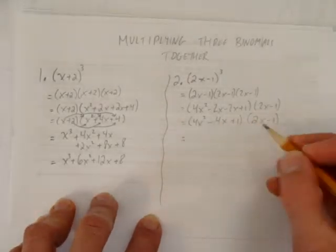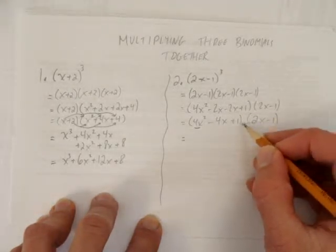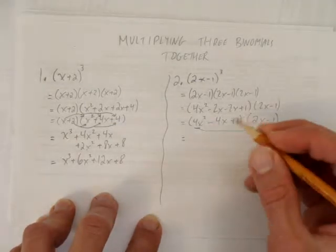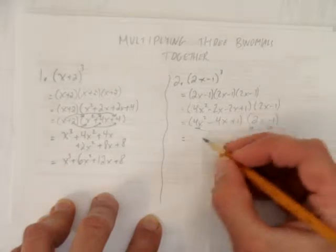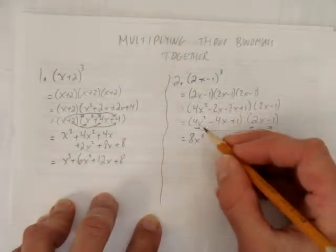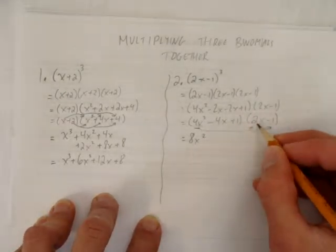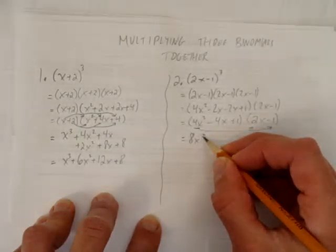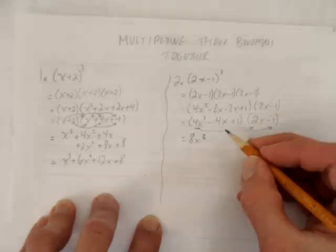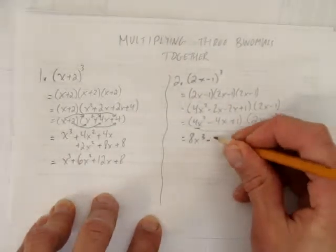How do you handle this? Take each thing in the first brackets and times it by each thing in the second brackets. So, we'll start with 4x squared times the 2x and times the minus 1. 4x squared times 2x is 8x squared. 4x squared times minus 1... Oh, sorry, I made a mistake here. 4x squared times 2x is 8x cubed, I should say. Multiply the coefficients, add the exponents. 4x squared times minus 1 is minus 4x squared.